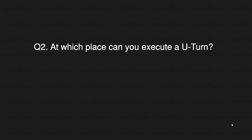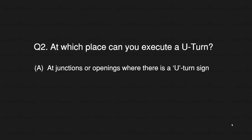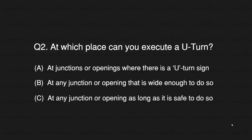Quiz question two: At which place can you execute a U-turn? A: At junctions or openings where there is a U-turn sign. B: At any junction or opening that is wide enough to do so. C: At any junction or opening as long as it is safe to do so.